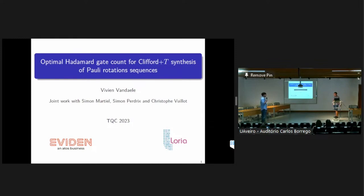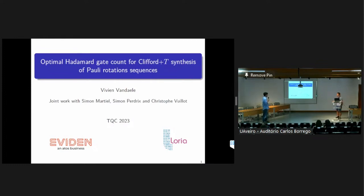As we say, it is a great pleasure now to have Vivien Vandel. He's a PhD student from Atos Quantum Computing and also in RIA. He's actually a PhD student of Simon, who will be the third speaker of this session. Vivien will tell us about optimal Hadamard gate count for Clifford plus T gate synthesis of Pauli rotation sequences. Thank you very much for being here today, and the floor is all yours.